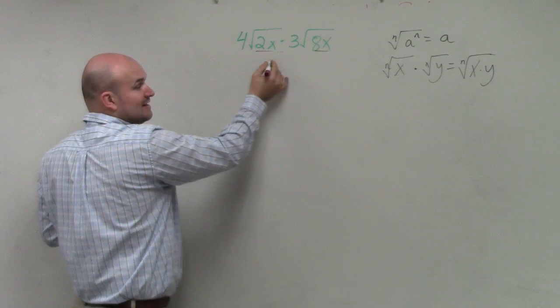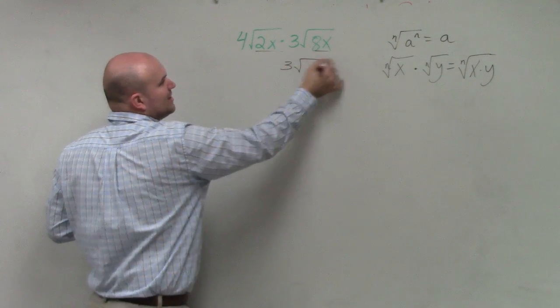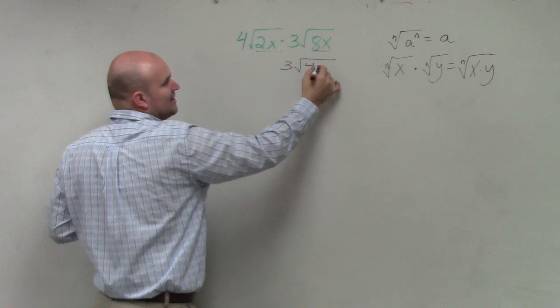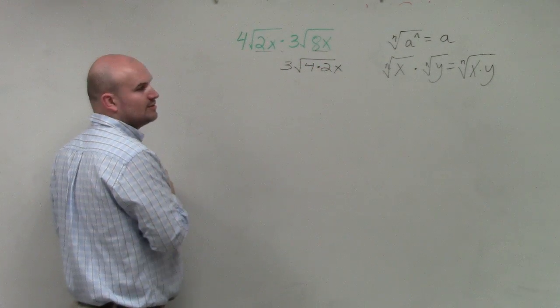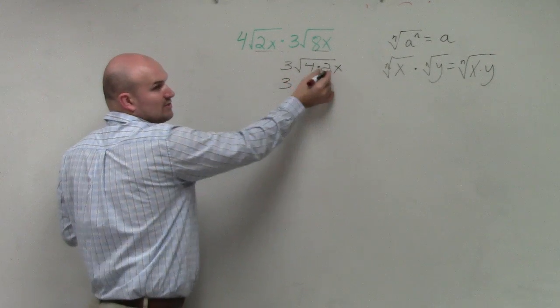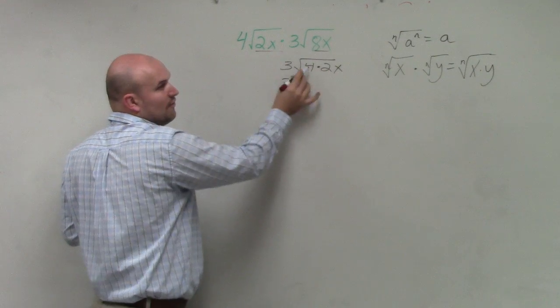Now, I can't really simplify anything here. However, here, I could break this up. 8 is not a square number, but I can rewrite that as 4 times 2x, correct? Or 4 times 2, right? So 4 is a square number.